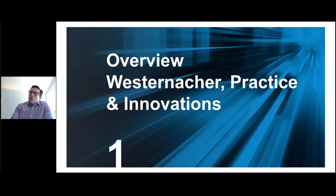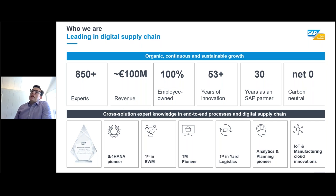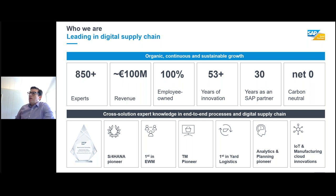Westernacker is a leading consulting SAP partner in digital supply chain. We have globally about 850 plus experts and revenue of around 100 million euros. It's an employee-owned company that has been in the innovation space for over 53 years. We've been an SAP partner for 30 years and have achieved a net zero carbon neutral status. We are cross-solution experts in end-to-end processes and digital supply chain.